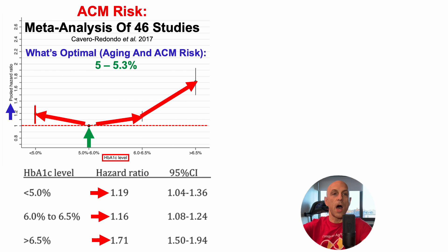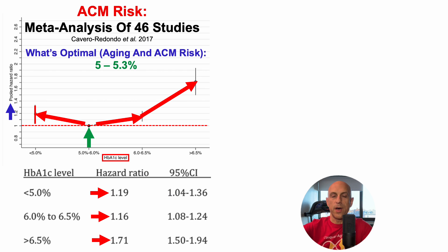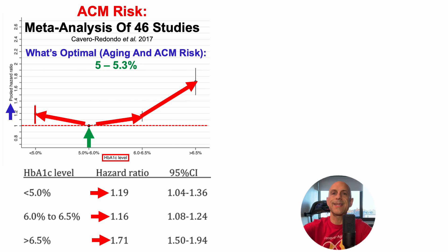To address what's optimal, including both the aging and all-cause mortality risk data, somewhere in the 5 to 5.3% range may be optimal — that's what's found in youth. When considering that HbA1c increases during aging, and that the lowest risk for all-cause mortality was in the 5 to 6% range, we want to be closer to 5, but not below 5, as that was associated with increased risk. So 5 to 5.3% is a fair range for what's optimal.